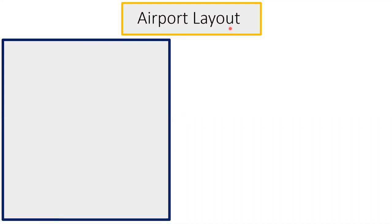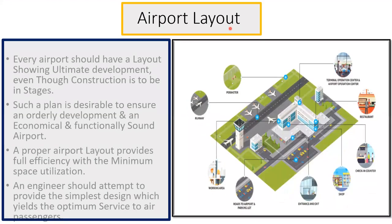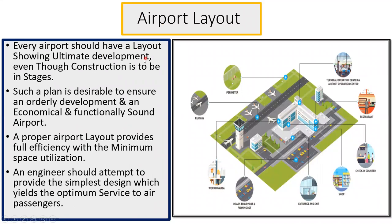Hello learners. In this lecture we will see how the airport layout has to be done and we'll also try to see what are different types of airport layout. Every airport should have a layout showing the ultimate development even though the construction is to be done in stages. Such a plan is desirable to ensure an orderly development and economical and functionally sound airport. The proper airport layout provides full efficiency with minimum space utilization, and engineers should attempt to provide the simplest design which gives optimum service to the air passengers.